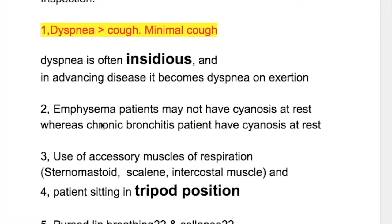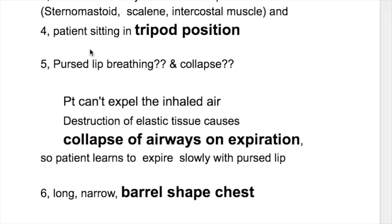Number two, emphysema patients may not have cyanosis at rest, whereas chronic bronchitis patients have cyanosis at rest. Number three, these patients use accessory muscles of respiration — the sternomastoid and intercostal muscles. Number four, the patient is sitting in a tripod position.